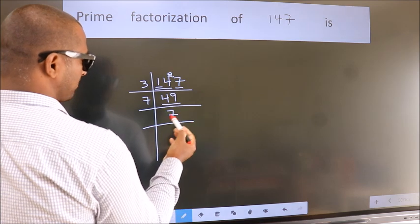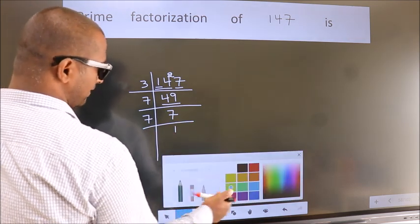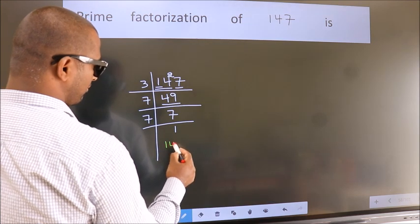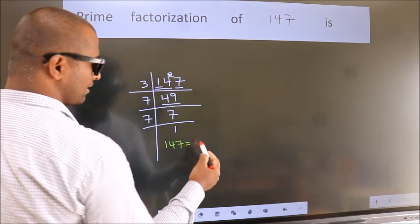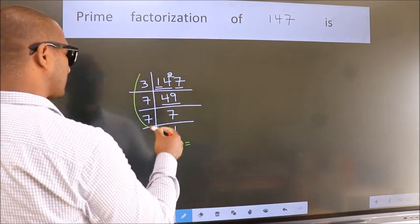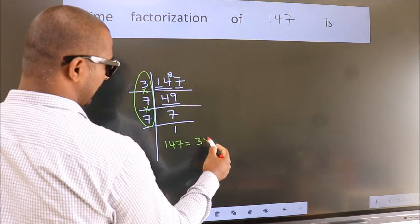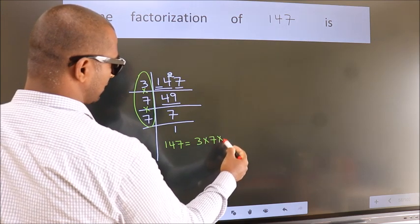7 is a prime number. So 7 times 1 equals 7. Therefore, prime factorization of 147 is the product of these numbers. That is 3 times 7 times 7.